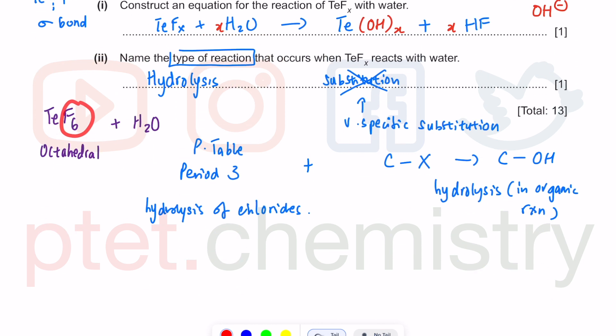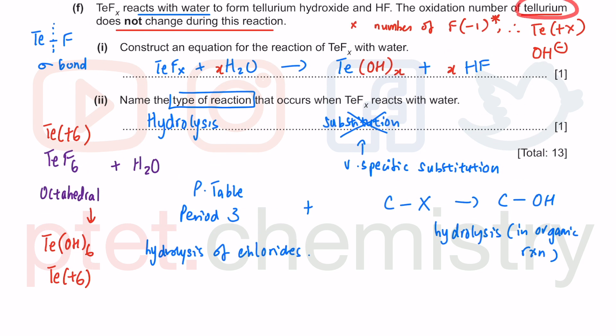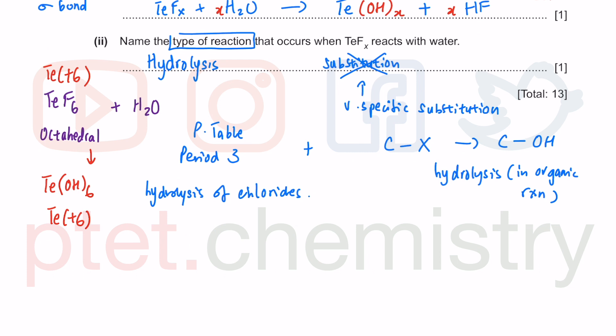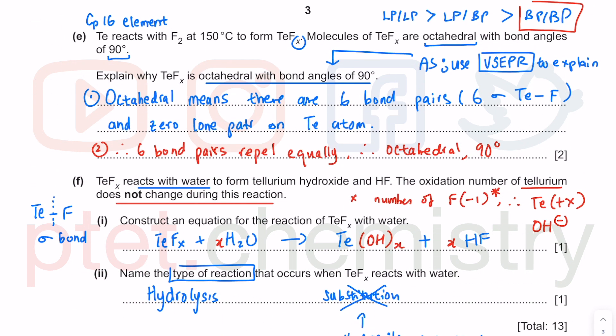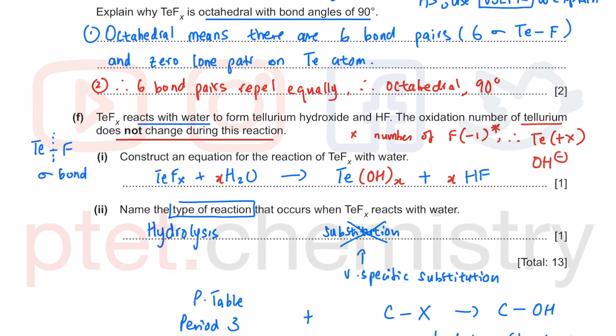We need to balance the equation. We were told it was octahedral, so we can write TeF6 plus H2O forming Te(OH)6 because it's still tellurium plus six, as the oxidation number doesn't change. Then we get six HF to balance the equation. This is fine because we were told specifically it was octahedral, therefore TeF6. If you choose to use the algebra method with TeFx, you must balance with X, because balancing equations is implied even from IGCSE standard. That's it for this 13 mark first question.